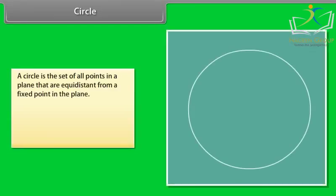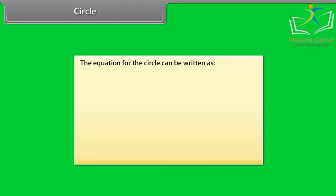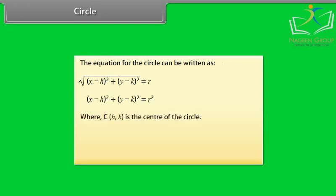A circle is the set of all points in a plane that are equidistant from a fixed point in the plane. The distance from the center of a circle to a point on the circle is called the radius. The equation for the circle can be written as: where (h, k) is the center of the circle, r is the radius, and (x, y) is a point on the circle.